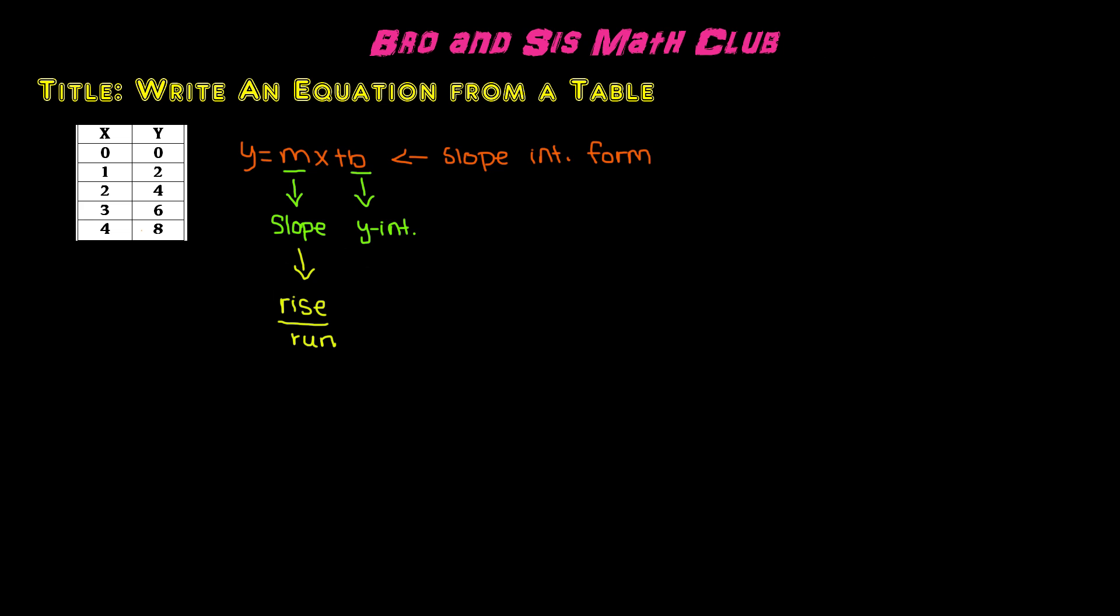So what this basically means is that if you look at a graph, and when you graph the points, in order to find the slope, it's always going to be the rise. So let's say if it was going up, and then it was going to the right. So this is rise over run.